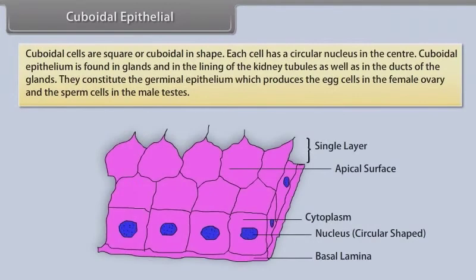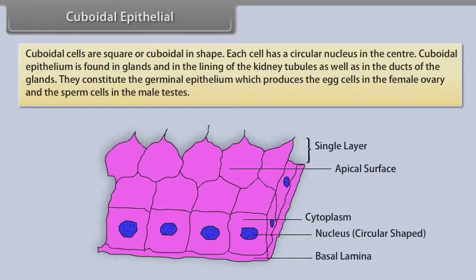Cuboidal epithelial cells are square or cuboidal in shape. Each cell has a circular nucleus in the center. Cuboidal epithelium is found in glands and in the lining of the kidney tubules, as well as in the ducts of the glands. They constitute the germinal epithelium, which produces the egg cells in the female ovary and the sperm cells in the male testes.